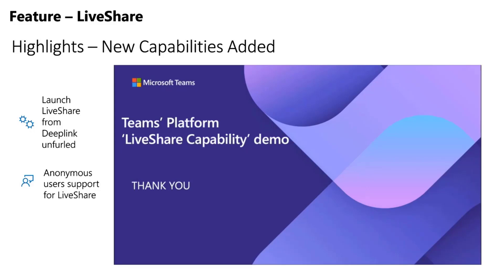Along with that, we've also added support for deep links — what we saw in the video where you have a small link that you share and it expands into a larger card with more details like the video link and video image, giving more information to users so you can launch it directly from the deep link. We've also added support for anonymous users, meaning users who have joined a meeting anonymously can now also participate in Live Share sessions.